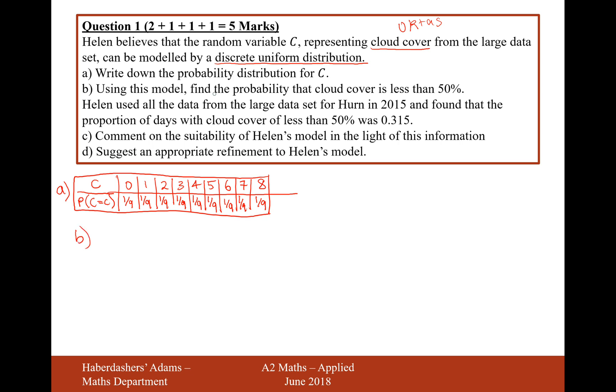Using this model, find the probability that cloud cover is less than 50%. Well, that's going to be the probability of C being less than four, because four would be half of the sky in cloud, so it's going to be three or fewer. So that's going to be four-ninths as the answer to that question there, because it would be one-ninth plus one-ninth plus one-ninth plus one-ninth, up to three, not including four, because four would be half cloud cover, and we want less than 50%.